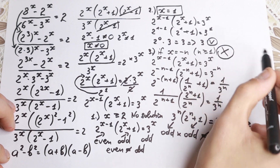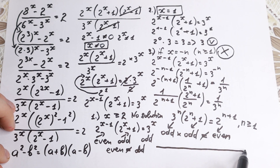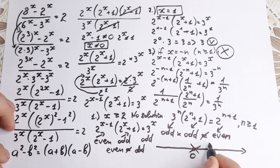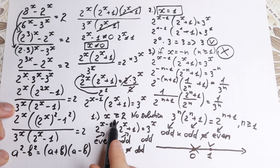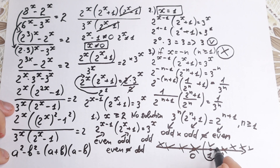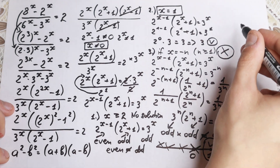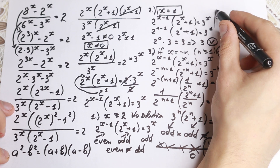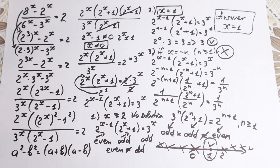So we have checked all cases: x equals 0 is rejected, x equals 1 works, x greater than or equal to 2 is rejected, and all negative values are rejected. We still have only one integer root, which is absolutely correct. Our answer is x equals 1. This is our solution to this problem. If you still have any questions, write them in the comments. Thank you for your support and your likes. See you in the next videos.